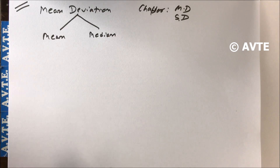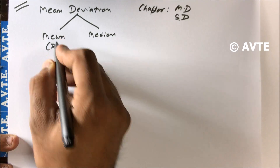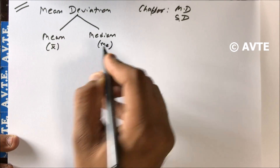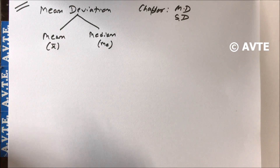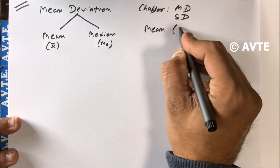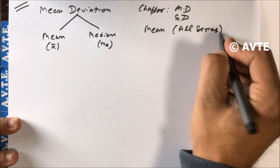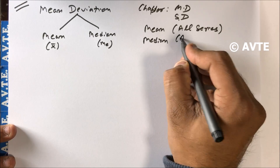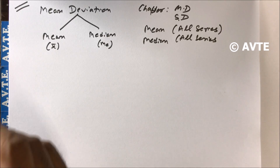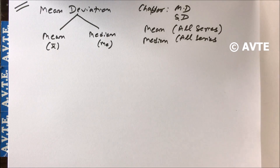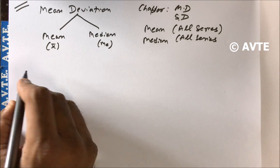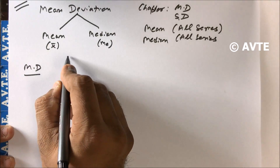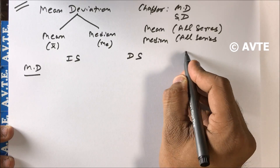First, you know how to find mean. x-bar is the symbol for finding mean and ME is the symbol for finding median. In the previous videos I told you how to find mean in all series using the direct method, and also how to find median in all series. Today we find mean deviation from mean and median.